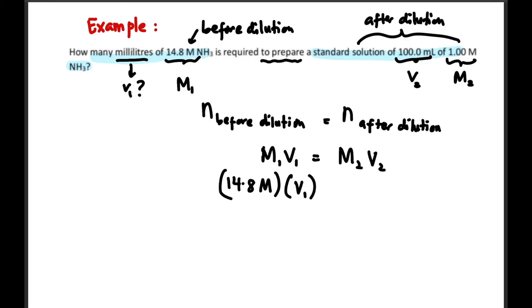Ganti masuk value: 14.8 molar times V1 yang kita mau cari is equal to 1.00 molar times 100 ml. And again saya tidak tukar ml kepada liter because nanti kalau saya tukar jawapan saya dalam liter. But in this case jawapan saya 6.757 ml. So saya tidak tukar ml kepada liter.